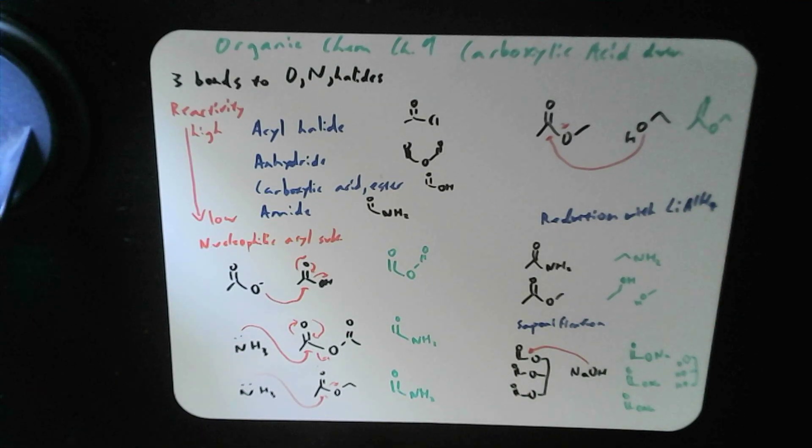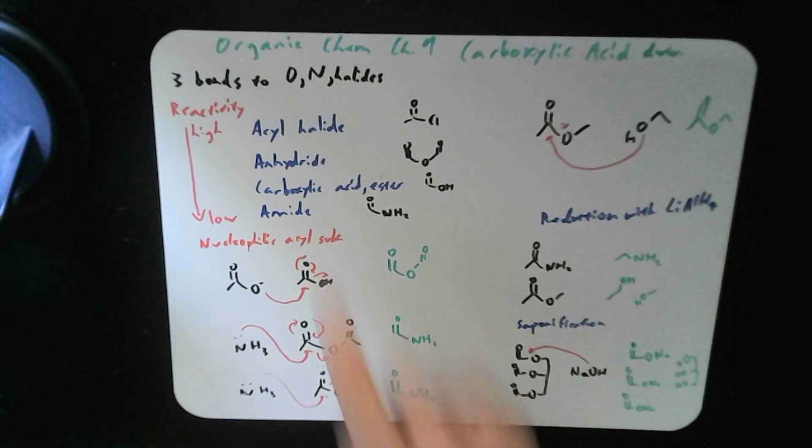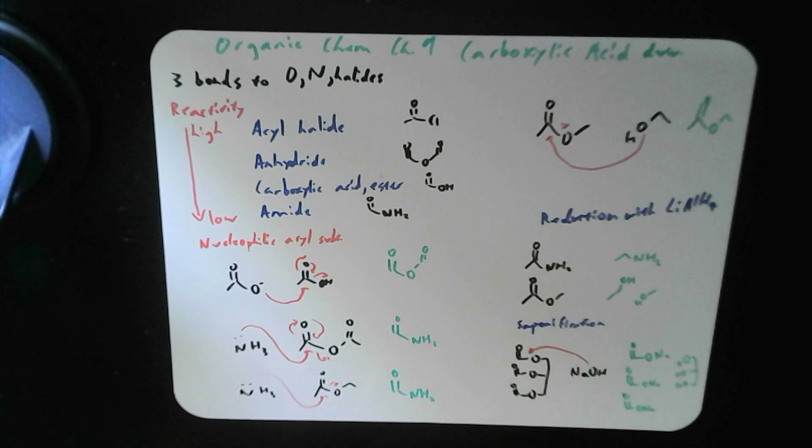So we have acyl halide, anhydride, carboxylic acid, ester itself, as well as amide. These are the common derivatives you all need to know, and reactivity is the highest for acyl halide. Why? Because these are really good leaving groups: the chloride, bromide, iodide, and so on.